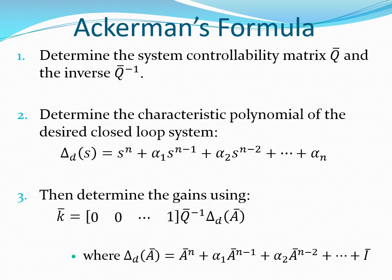For the approach that uses the Ackermann's formula, the first step is to determine the controllability test matrix and its inverse. The second step is to determine the required characteristic polynomial. This polynomial is expressed in the format delta(s) = s^n + alpha1*s^(n-1) + alpha2*s^(n-2) + ... + alpha_n, where n is the order of the system and alpha1 through alpha_n are coefficients of the characteristic polynomial. The third and final step is to obtain the gains in the matrix K using the Ackermann's formula.